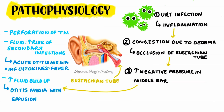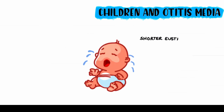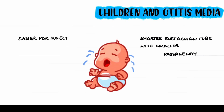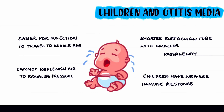This can be a cyclic process as the fluid can lead to recurrent acute otitis media. We understand that children are more likely to have otitis media, so now let's look at why this is the case. The eustachian tube in children is shorter, more horizontal, with a slightly smaller passageway compared to an adult. This means that if there is an infection in the nasopharynx, it is easier for the infection to spread to the middle ear. The infection can also cause increased mucus secretion, which blocks the tube, so the eustachian tube cannot open to replenish air in the middle ear and equalise the pressure. Other reasons include how children of a young age have a weaker immune response, so they're more vulnerable to infections.